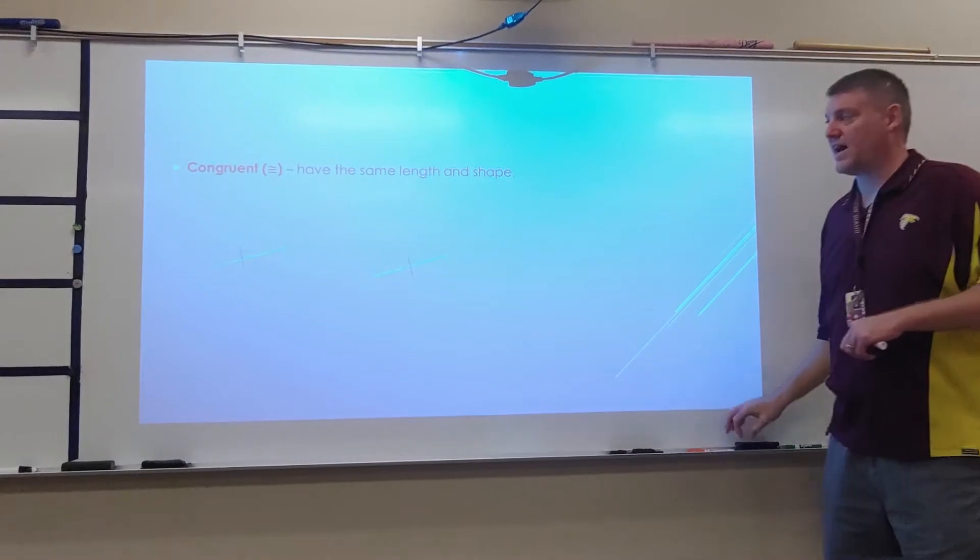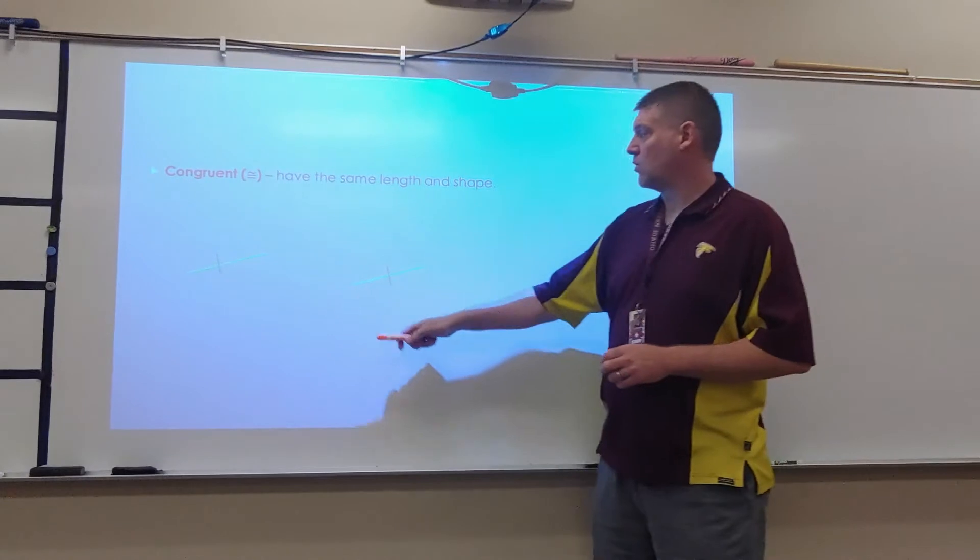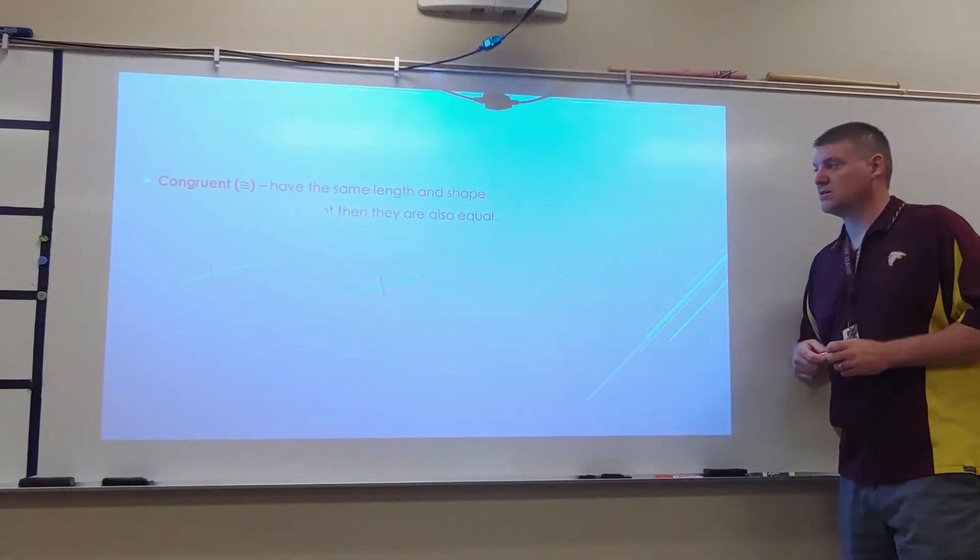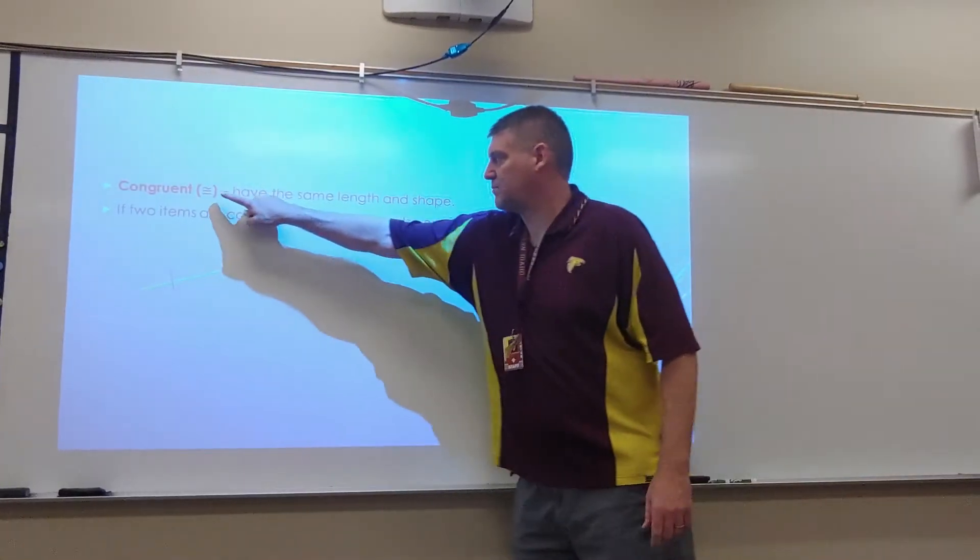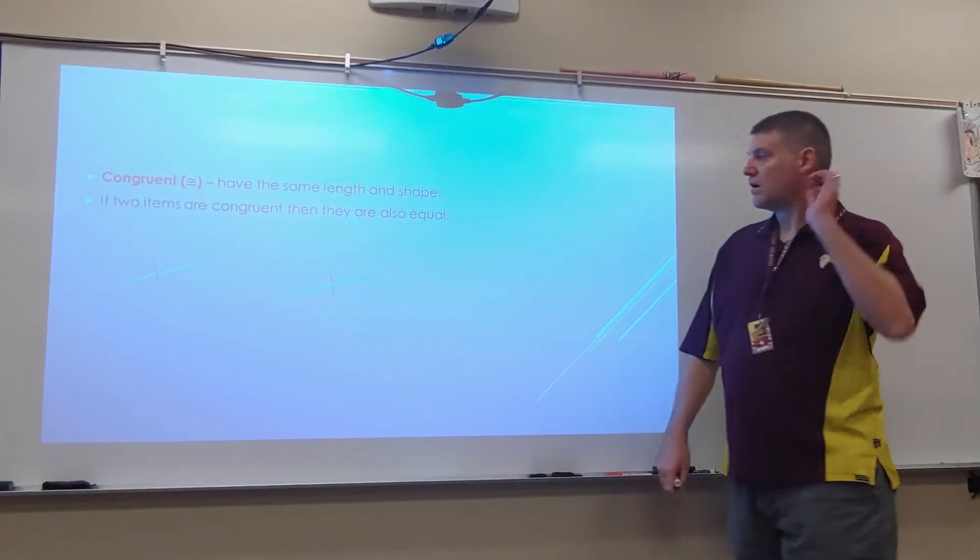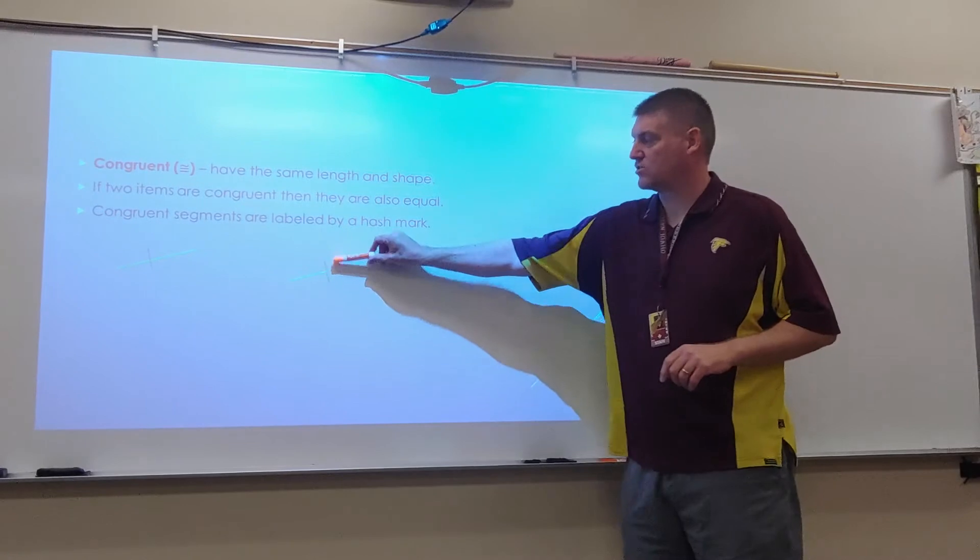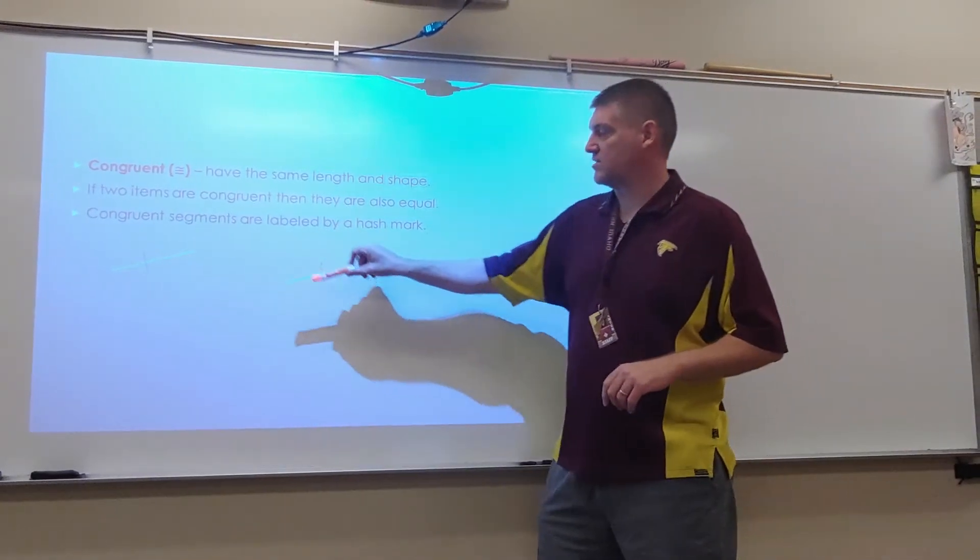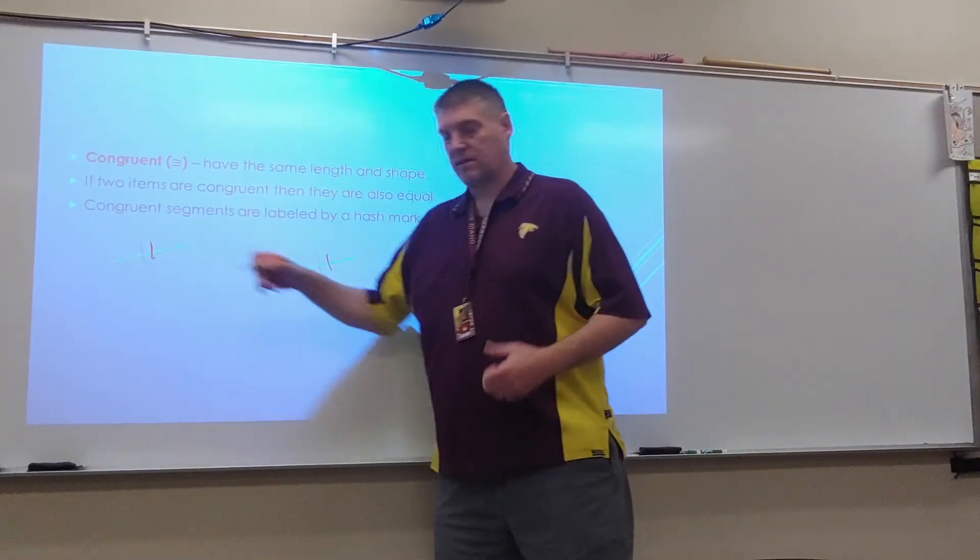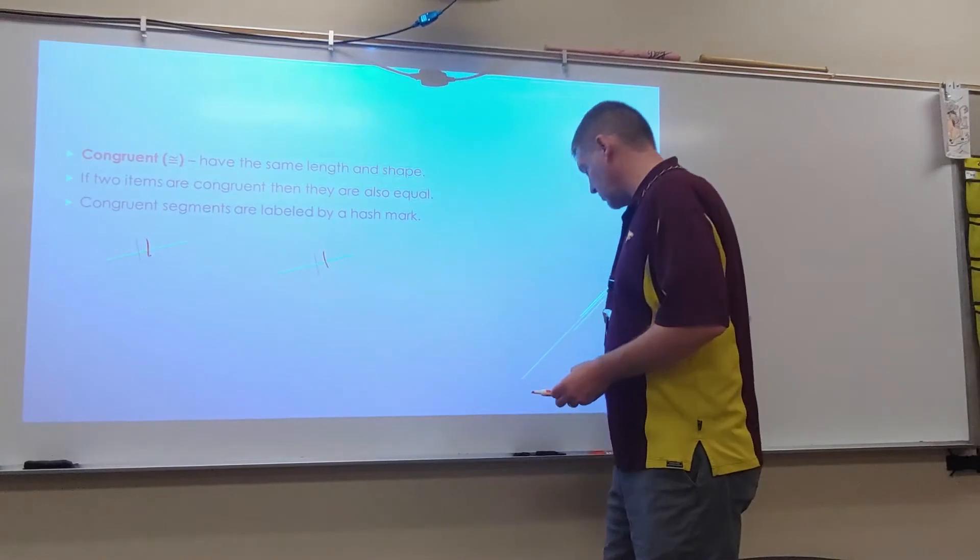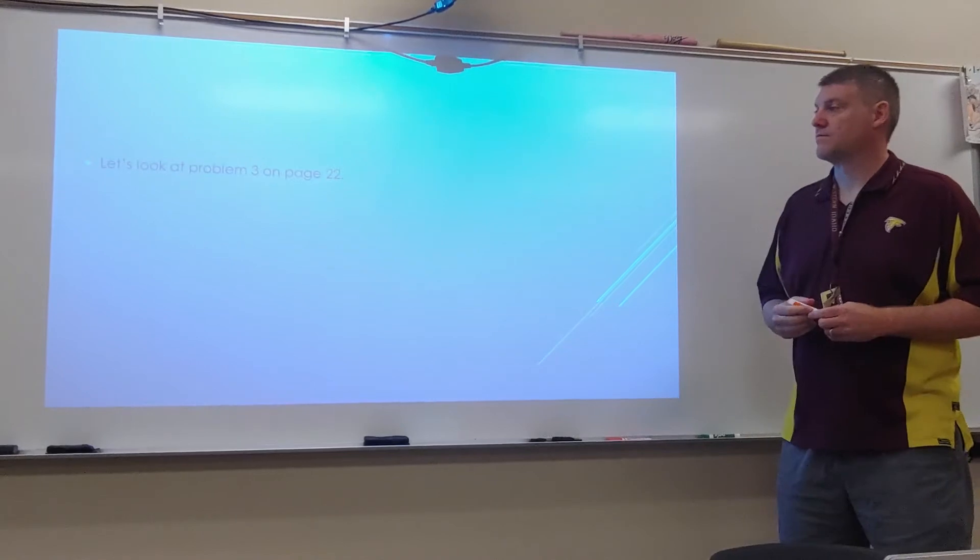Congruent means it has the same length and shape. If two items are congruent, then they are also equal. This basically means equal and similar. Congruent segments are labeled by a hash mark. We're going to put a hash mark through these because these are congruent. If I put two hash marks here, that means that the one with two hash marks is also congruent.